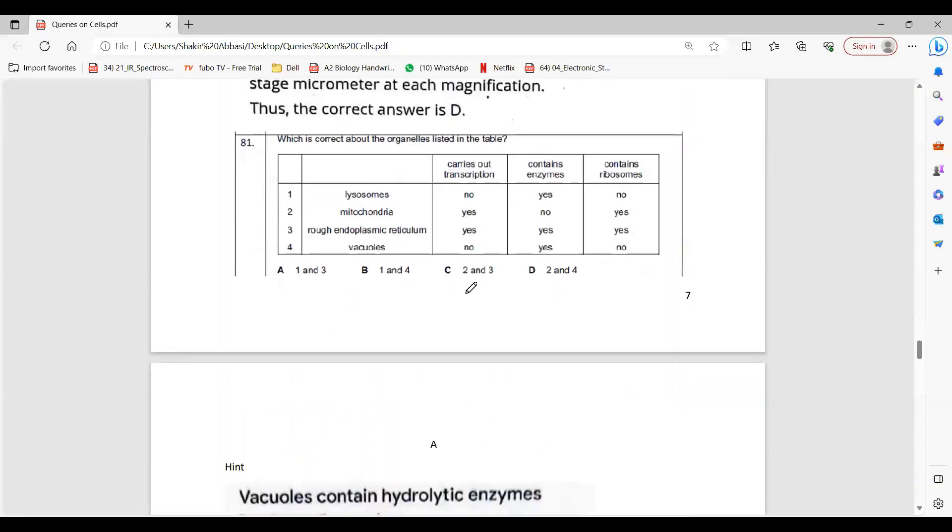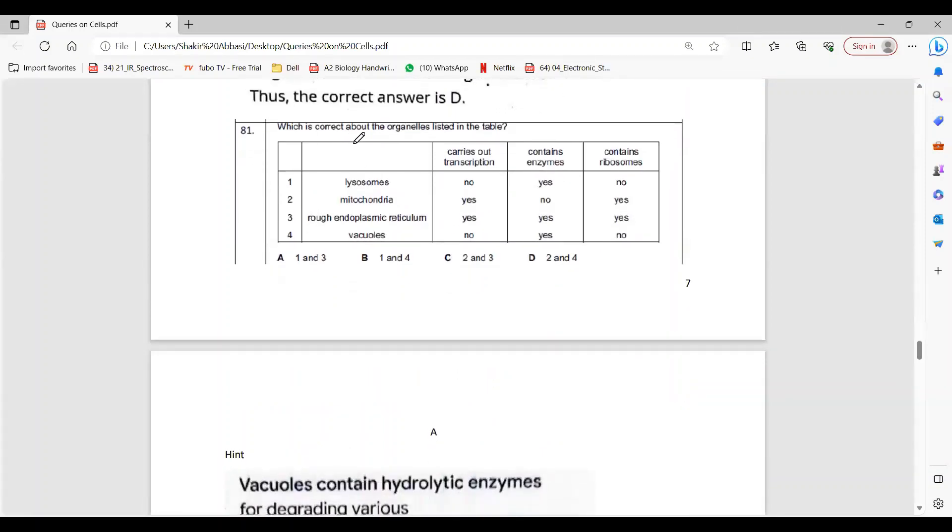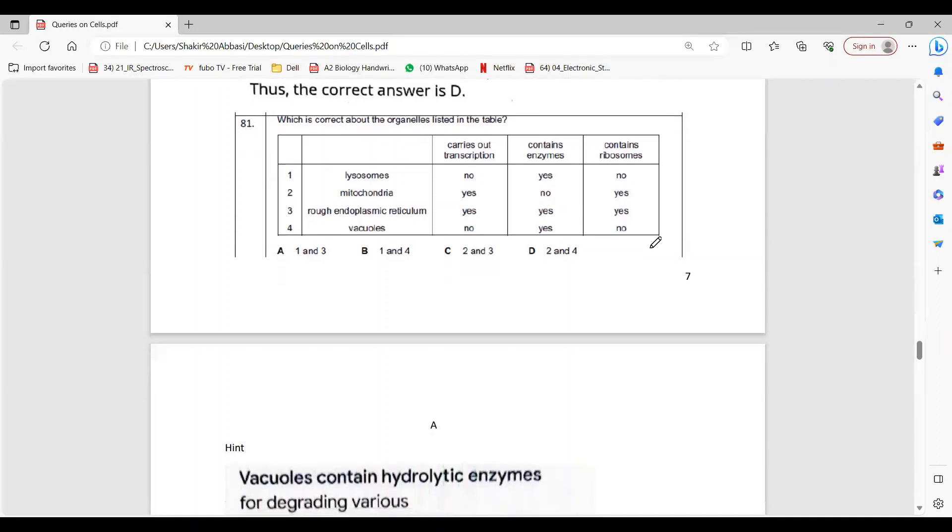Then the question is about correct organelle descriptions. So A, because one and three. Lysosomes have enzymes, and three says that they have transcription because obviously ribosomes - ribosomes are where RER is, where ribosome is found, right? And ribosomal RNA.